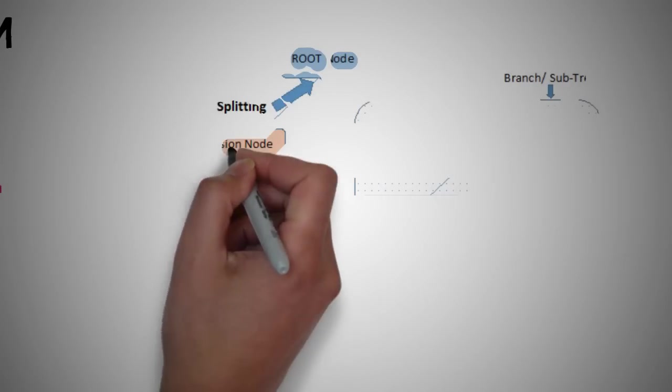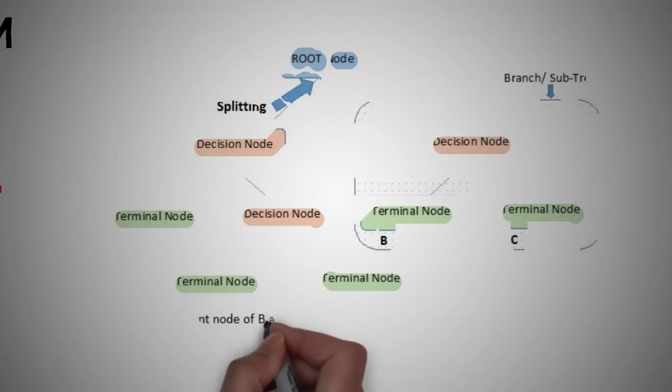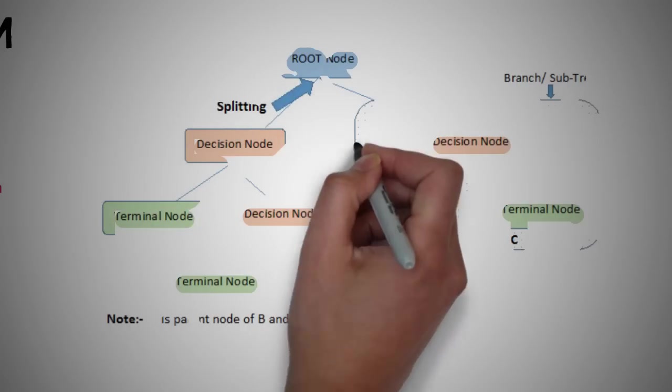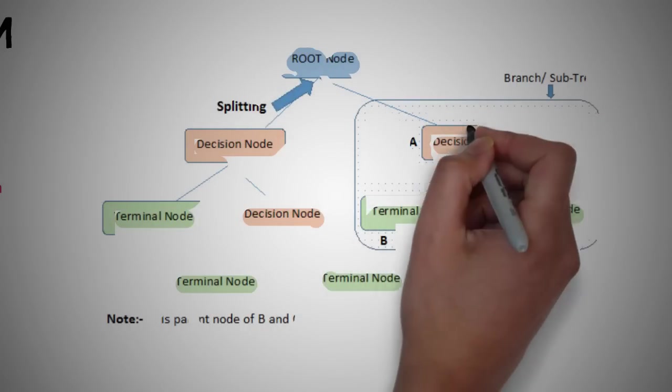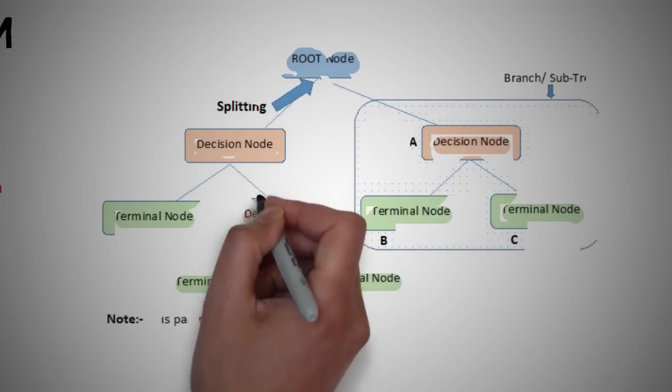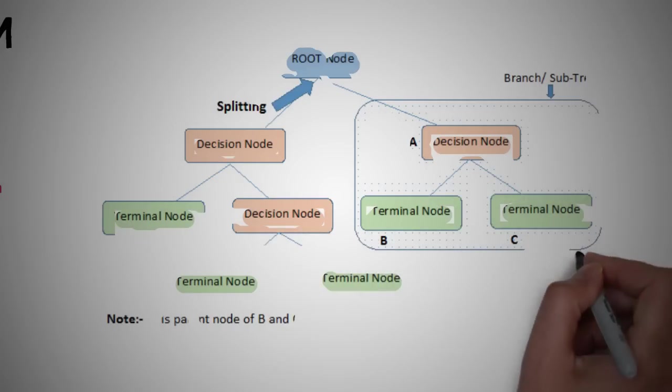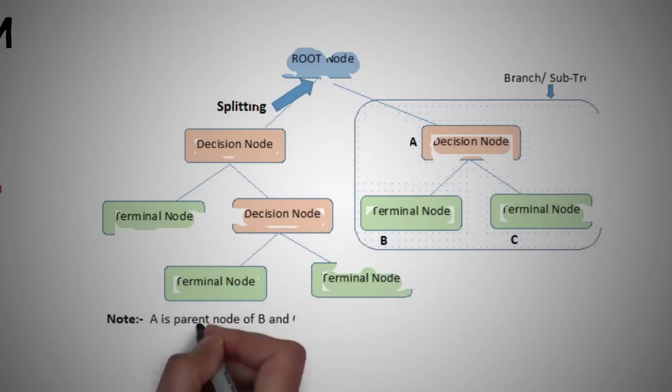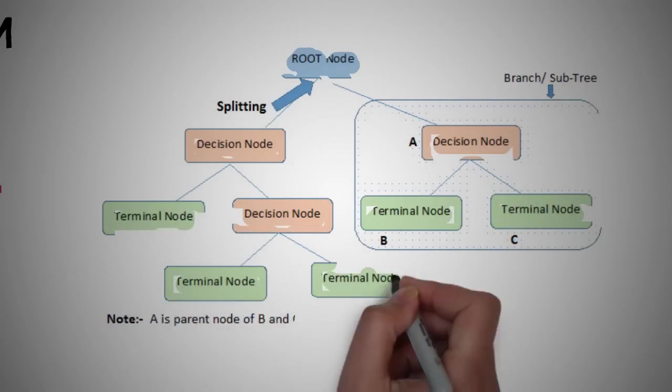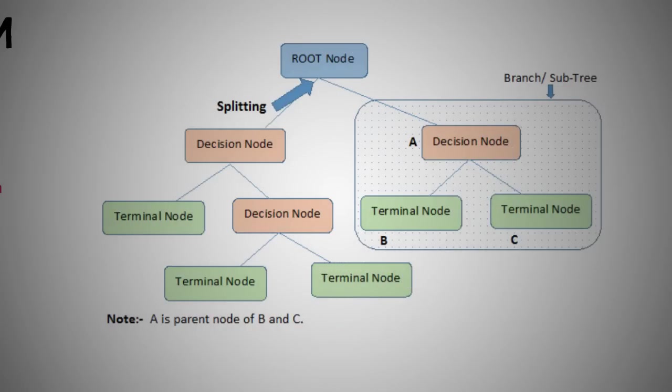A decision tree is a flowchart-like structure where each internal node denotes a test on an attribute, each branch represents an outcome of the test, and each leaf or terminal node holds a class label. The topmost node in a tree is the root node. In decision analysis, a decision tree can be used to visually and explicitly represent decisions and decision making.